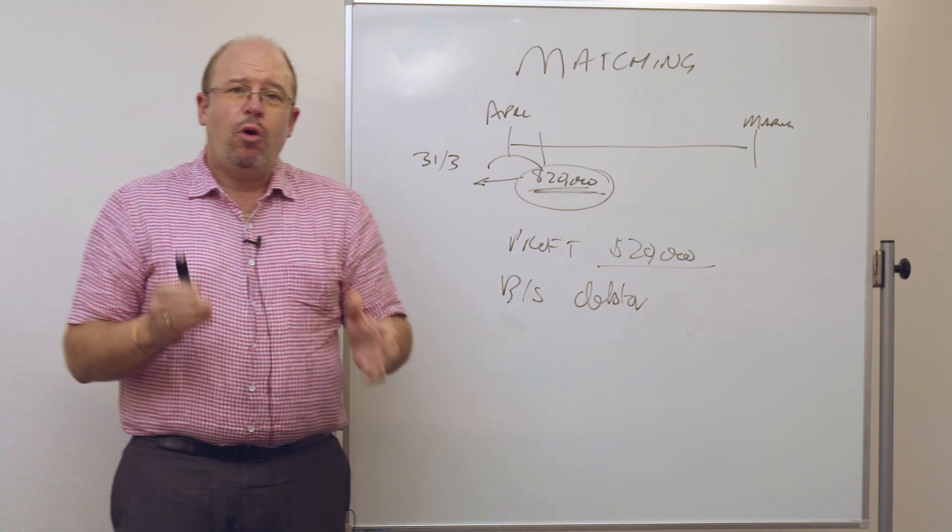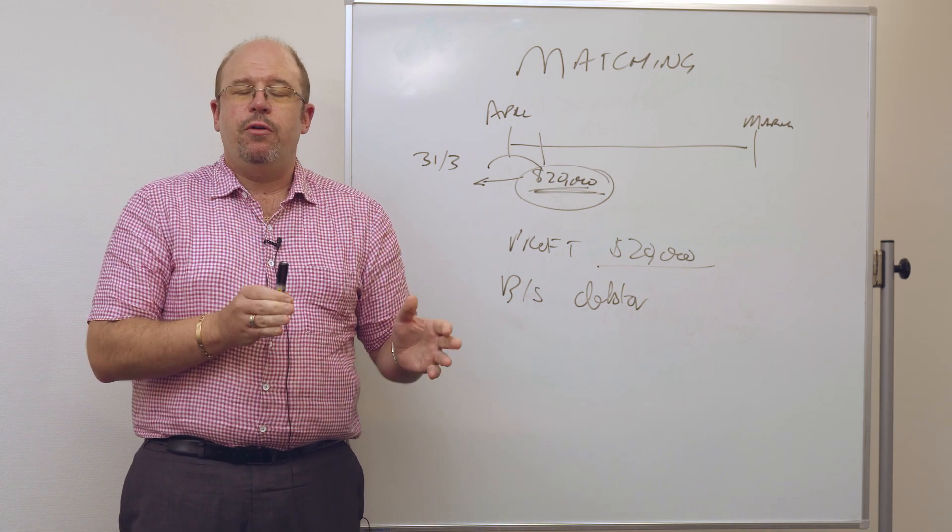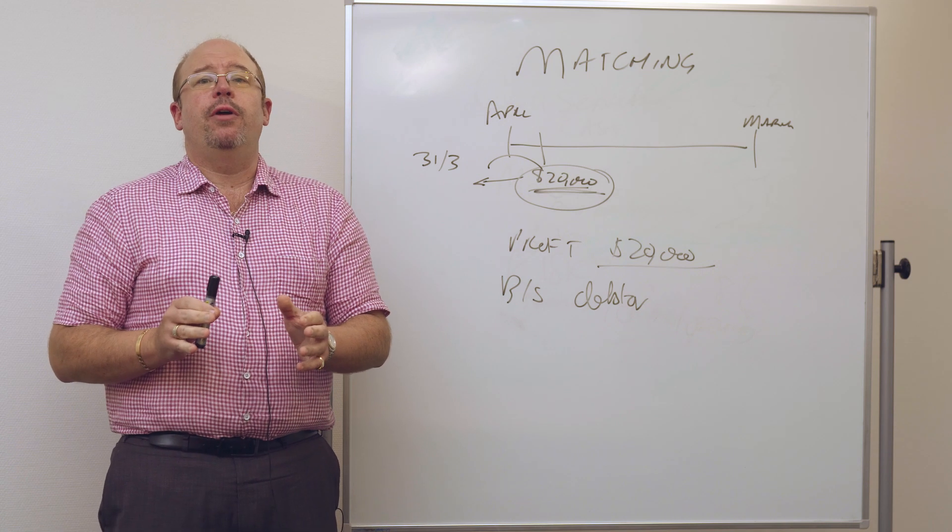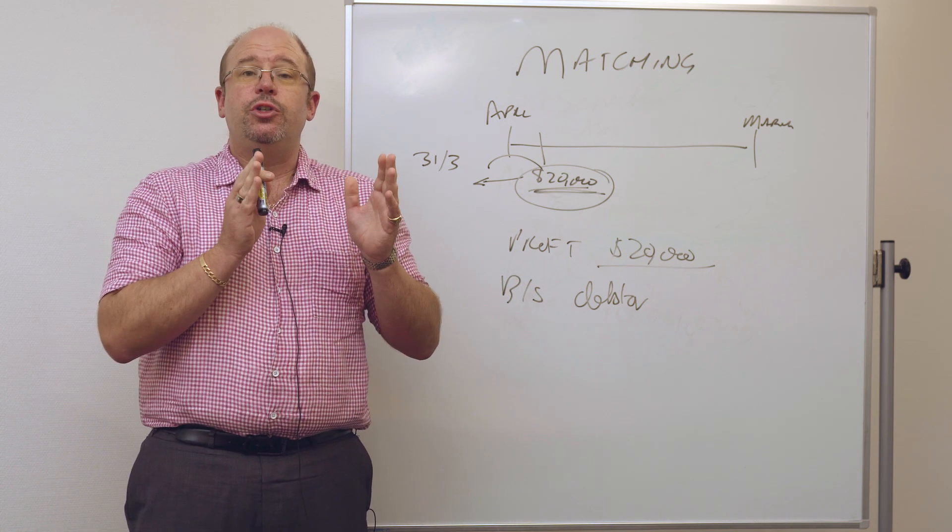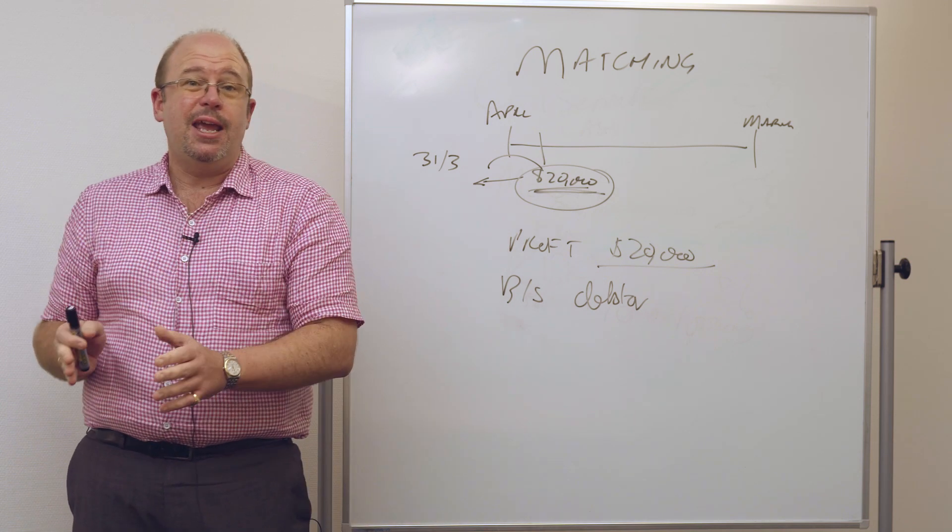So when you look at your profit, your profit that's generated doesn't necessarily align to the cash you've generated because it's trying to match the income and expenditure in the period in which it's incurred. And that's how we calculate tax.